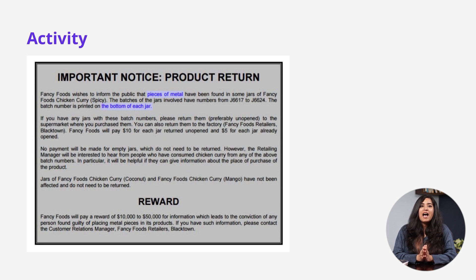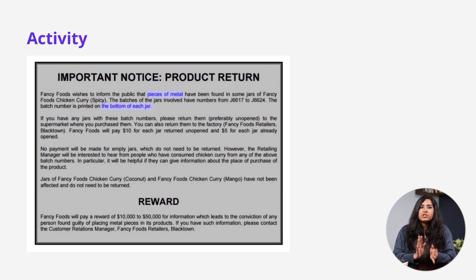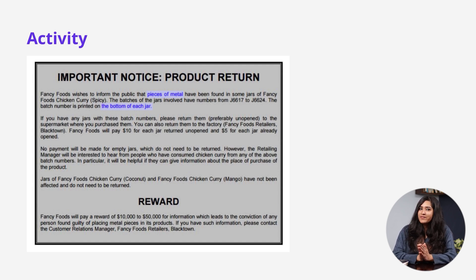Next question: how much will you receive for an open jar of contaminated chicken curry? Reading down onto the next paragraph, we can find the answer in the last sentence of the second paragraph, and that is $5. Now this was a little tricky, because there are actually two numbers there — $10 and $5. We need to read in detail to see what those numbers mean. This happens quite a bit in the reading exam, where they will throw in information to distract you. Make sure you don't just write down the first answer you see, but confirm it by reading through the rest of the sentence.